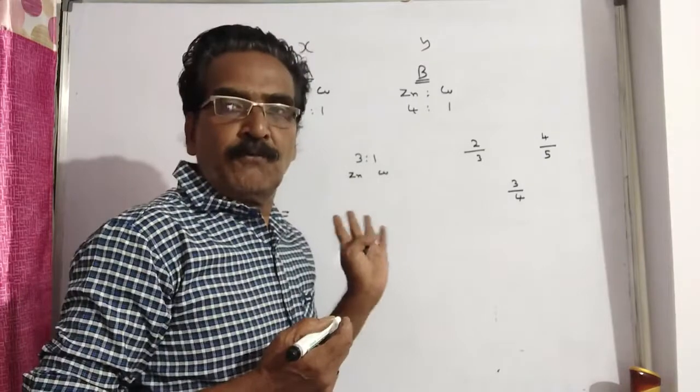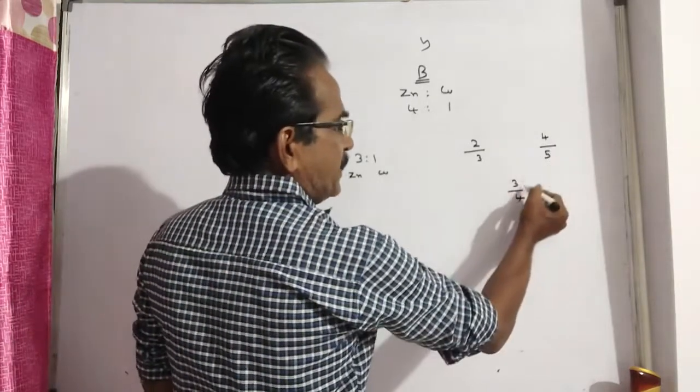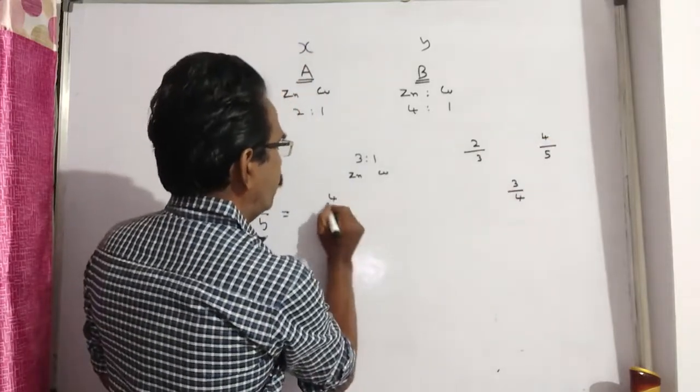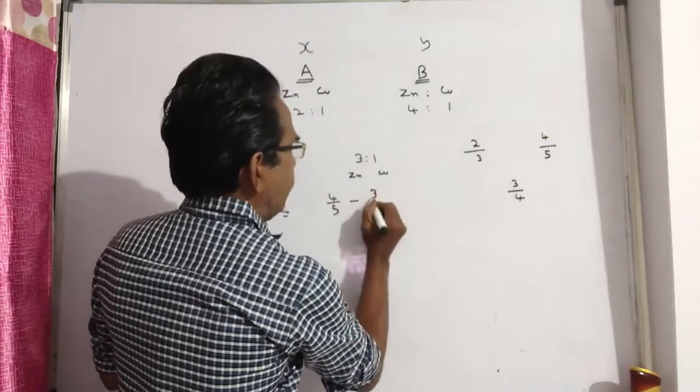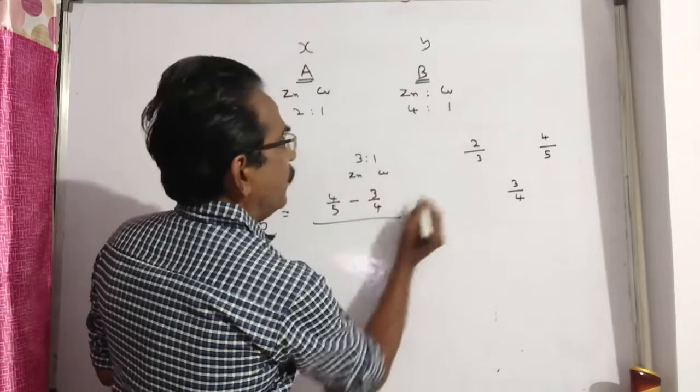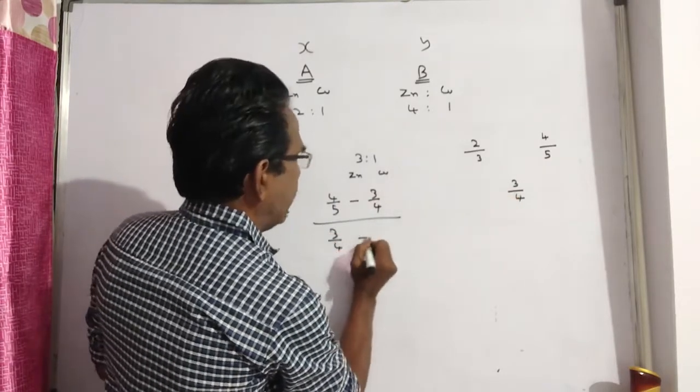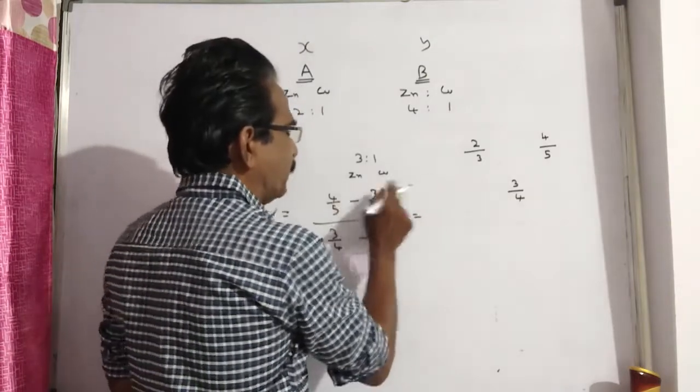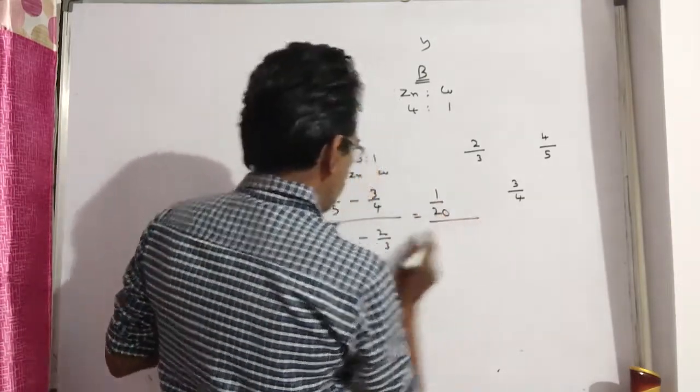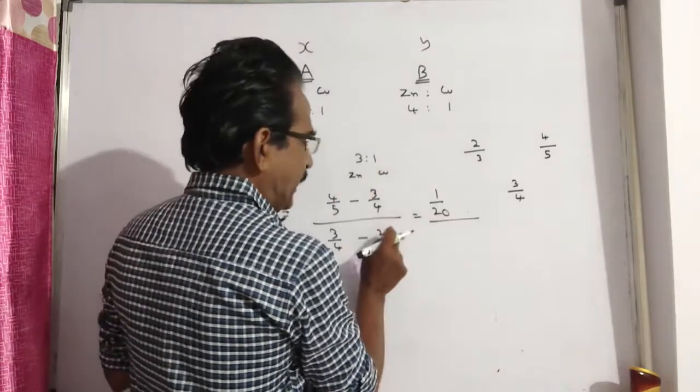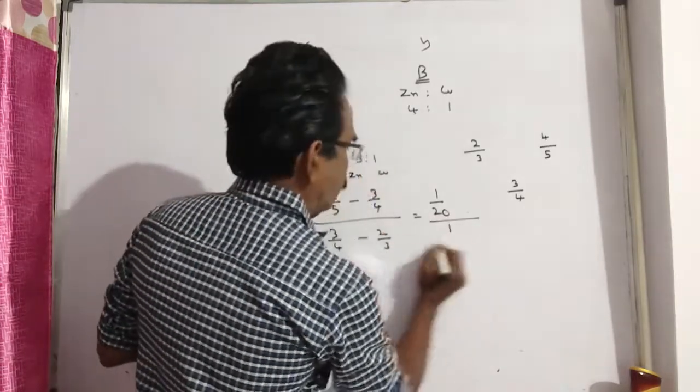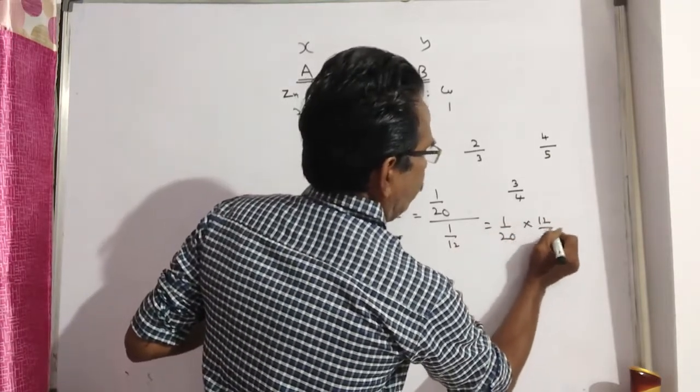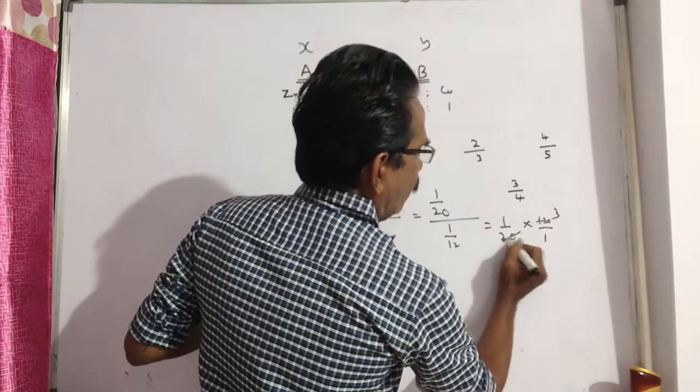Now, the quantities ratio is equal to this minus this, difference of these two by difference of these two. 4/5 minus 3/4 by 3/4 minus 2/3. This is equal to 4 by 4, 16 minus 15, 1/20, 3 by 3 is 9 minus 8, 1/8, 1 by 4, 3 is 12. This is equal to 1/20 into 12/1, 4 3s, 4 5s.